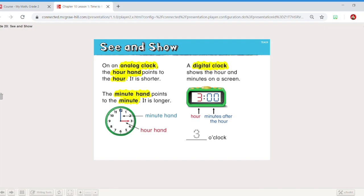On an analog clock the hour hand points to the hour. It is shorter. The minute hand points to the minute and it is longer. The example right there. A digital clock shows the hour and the minutes on a screen. The hour comes first. Minutes are after the hour. Three o'clock.